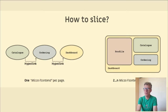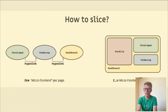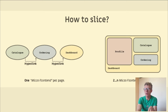A vertical consists not only of frontend, but also of some microservices. To speed up development, every team is responsible for one micro frontend or vertical. So one team is full-stack, and every team is autonomous.